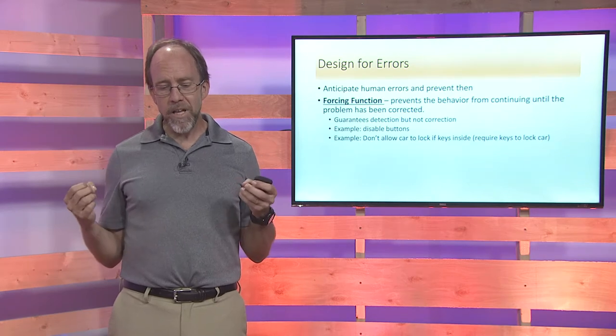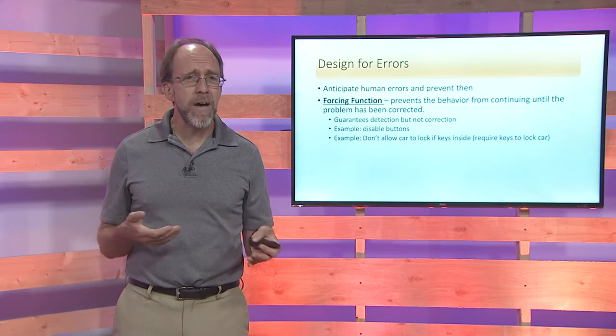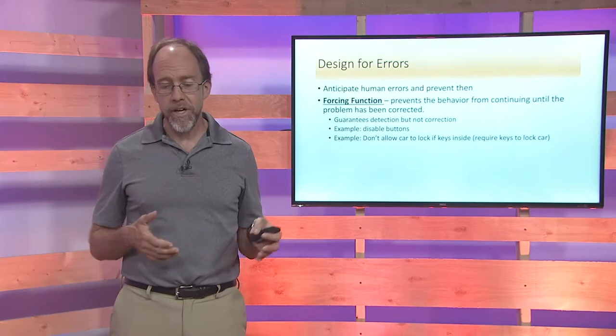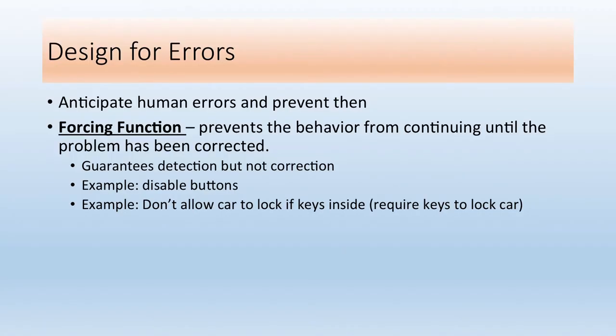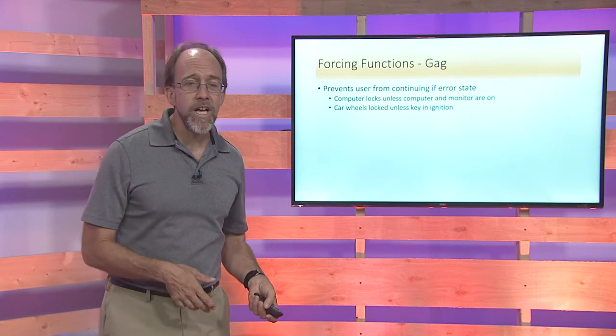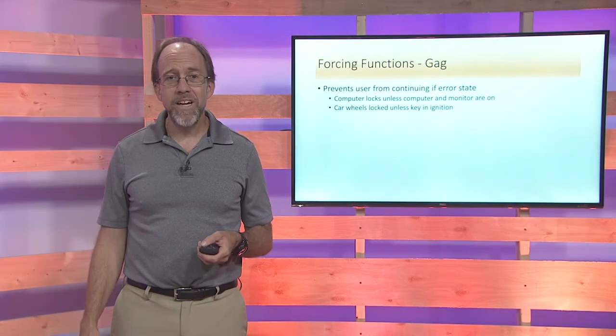Now, bottom line is you're gonna need to design for errors. So we're gonna need to know a little bit about the different forcing functions. Essentially, what do you do when you've got these possibilities of errors occurring? So these are some just basic forcing functions. Forcing function means we're going to make you do this or at least warn you. The first forcing function we're gonna deal with is the gag. Don't let them do it. Prevents the user from continuing if you're in an error state. Simple one like that is saying, hey, look, you can only lock the door to your car if your keys are not in it. Can't make the mistake in the first place. Just prevent it.